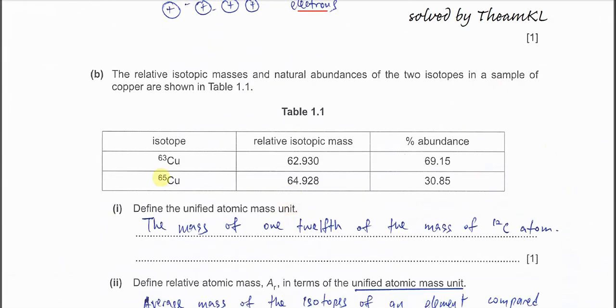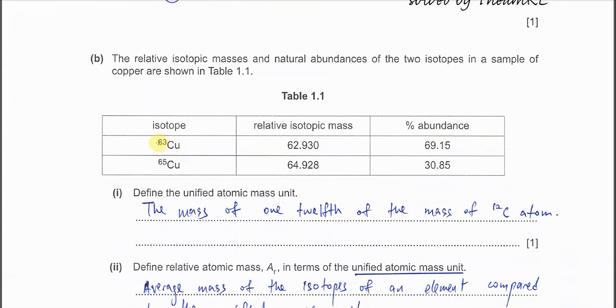Part B, so two isotopes given, copper 63 and copper 65. The relative atomic isotopic mass already given, this and with its abundance, and this one with its abundance.